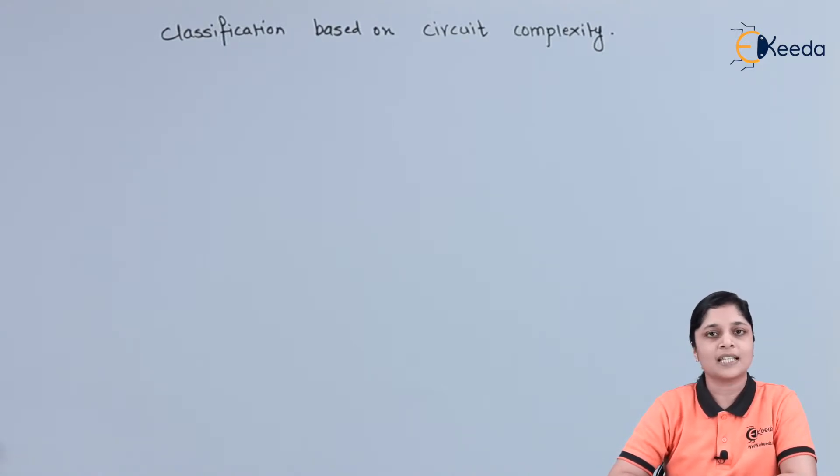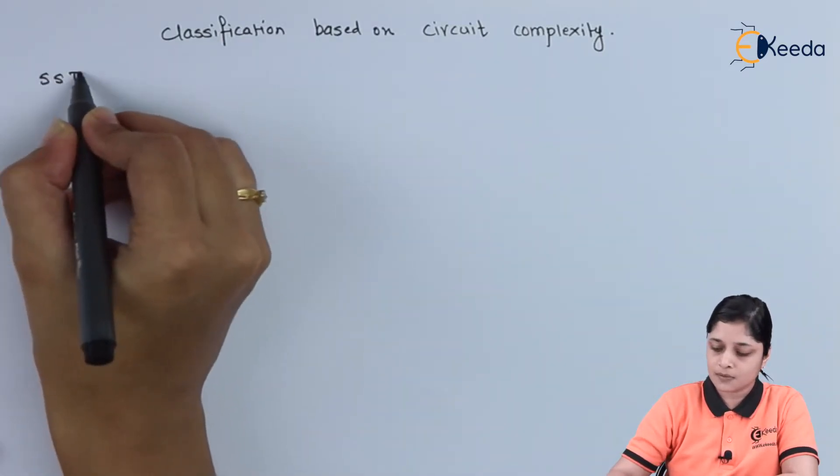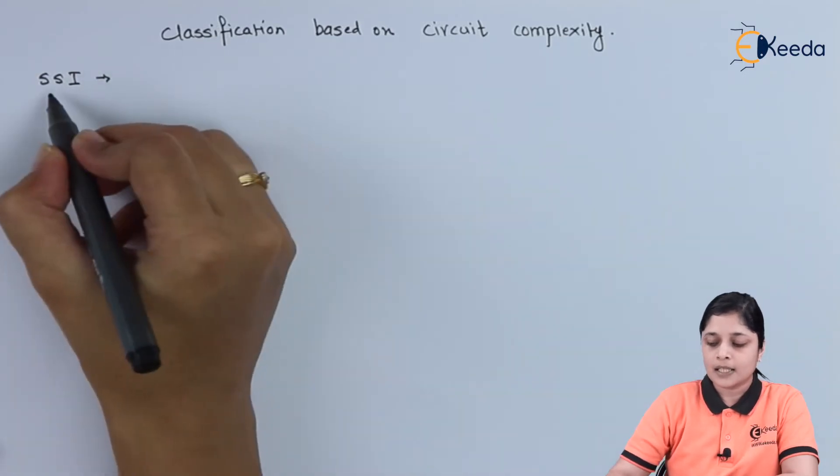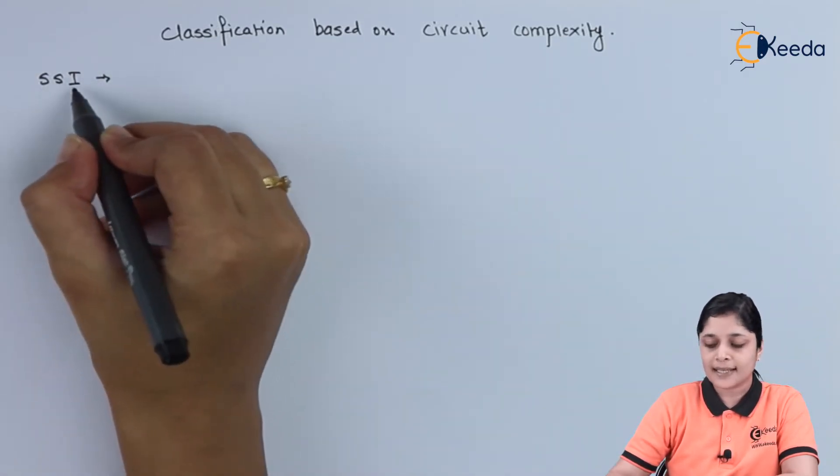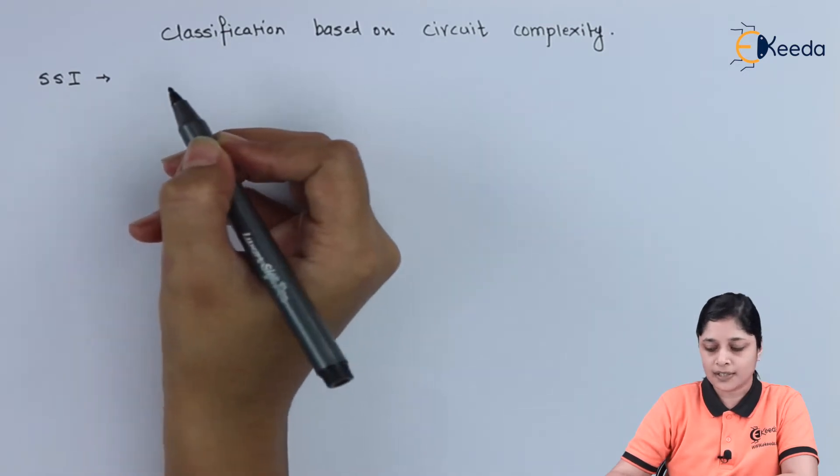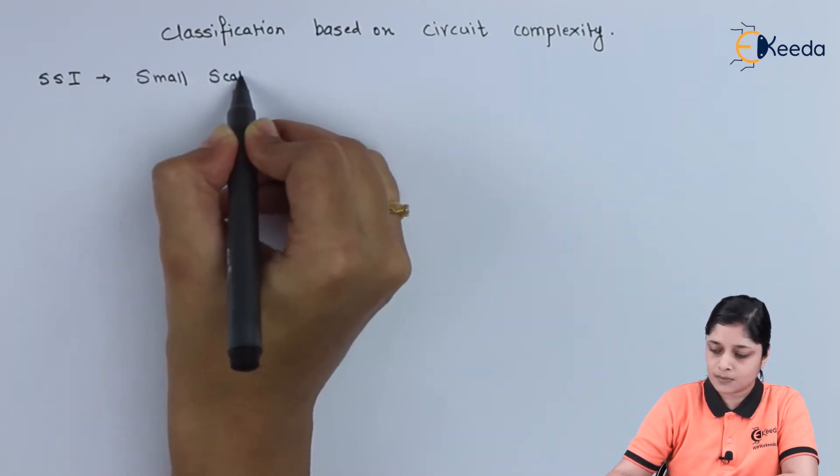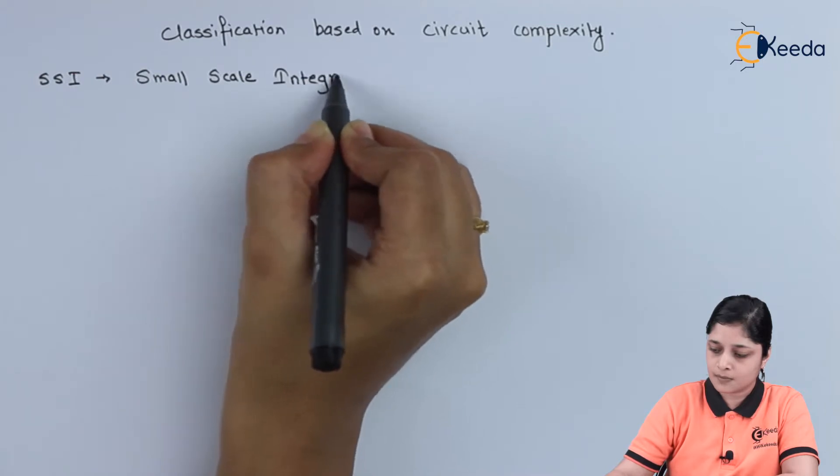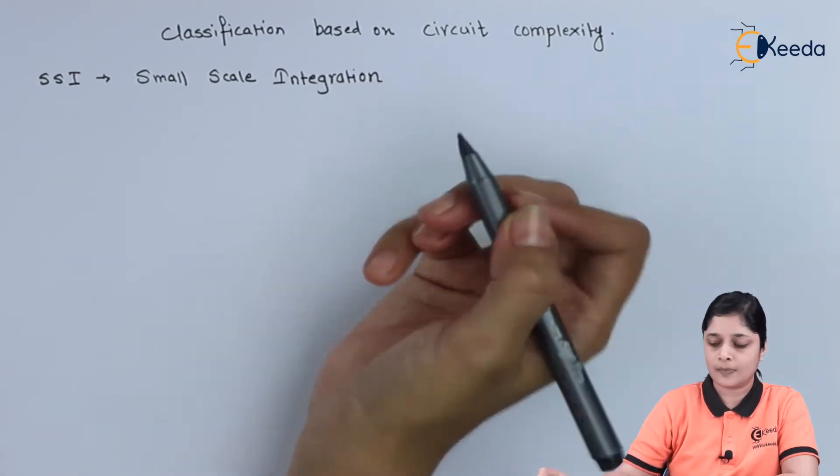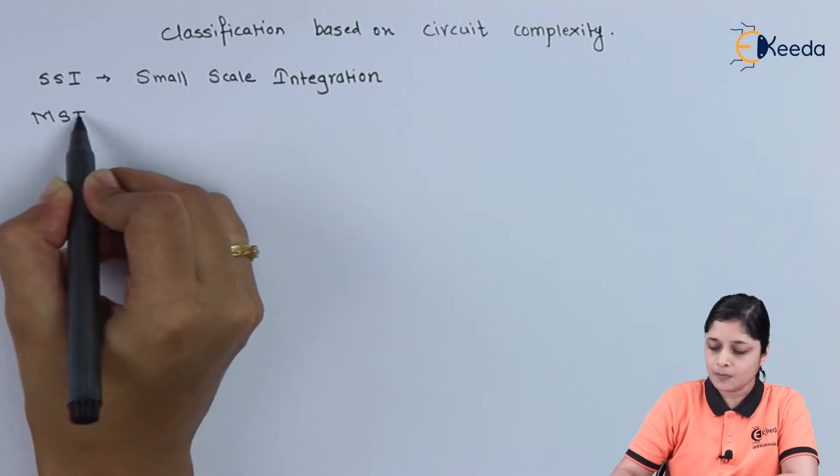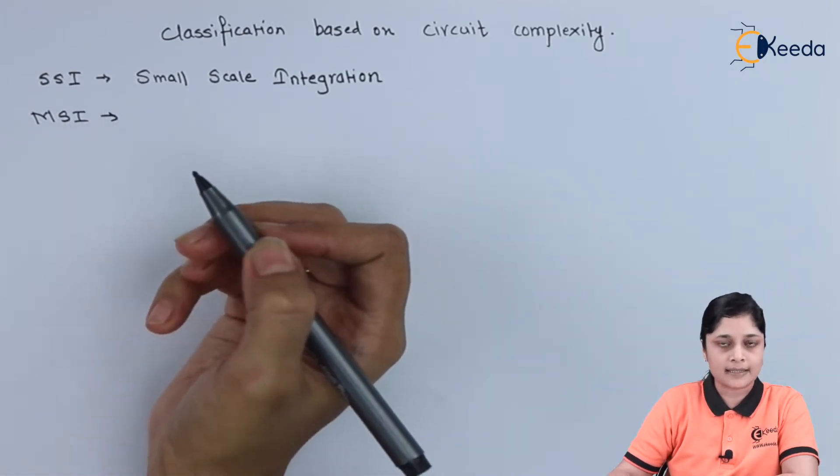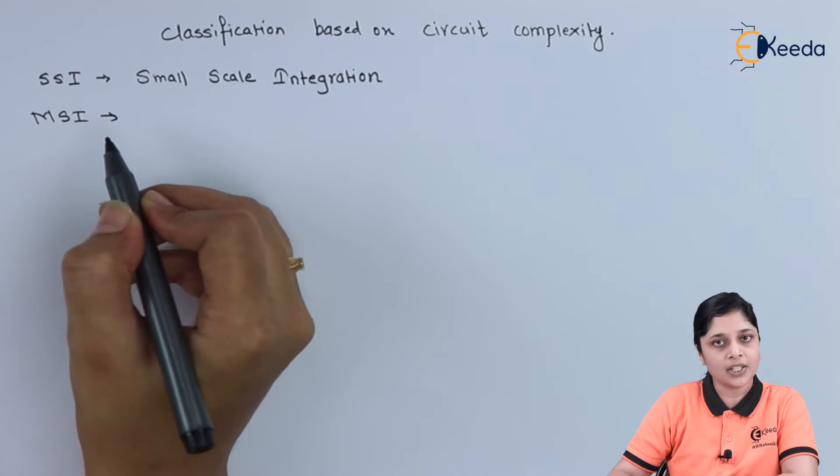So broadly, it is classified into four types: SSI technology, MSI technology, LSI technology, and VLSI technology. SSI stands for Small Scale Integration circuits. Then we have MSI circuits - MSI stands for Medium Scale Integration.